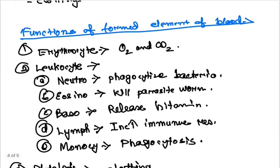Eosinophils kill parasitic worms, destroy antigen-antibody complexes, and inactivate some inflammatory chemicals of allergy. Basophils release histamine and other mediators of inflammation, and contain heparin as an anticoagulant.